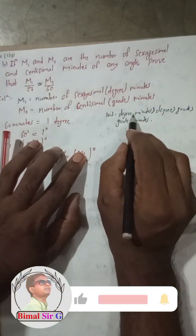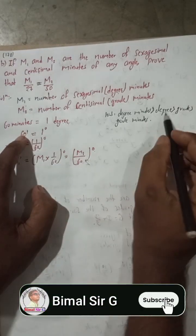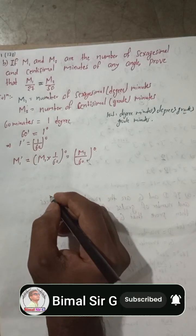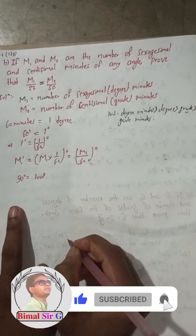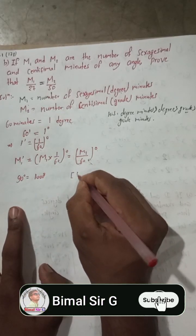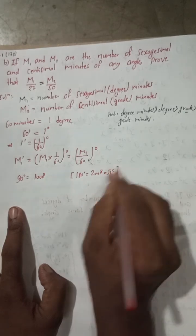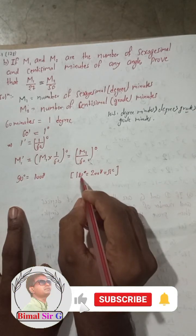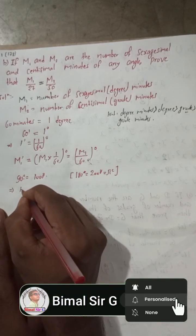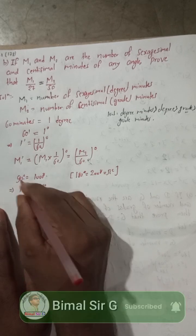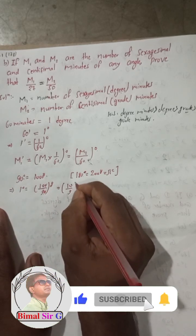For the degree-to-grade conversion, the formula is 90 degrees equals 100 grades. This comes from the known formula 180 degrees equals 200 grades. Using the unitary method, one degree equals 100/90 grades, which simplifies to 10/9 grades. A memory trick: the zero in 10 reminds you of the 0, and the 9 looks like 'g' for grade.